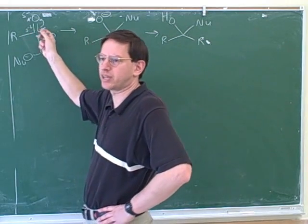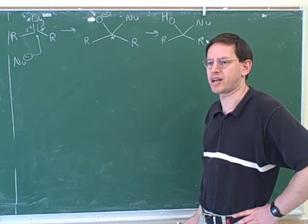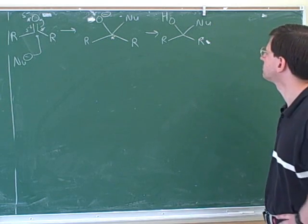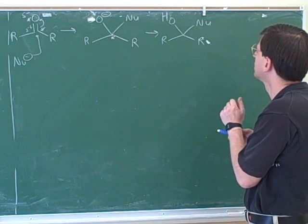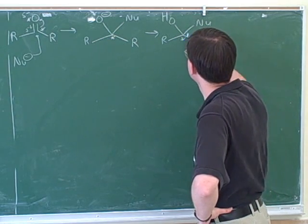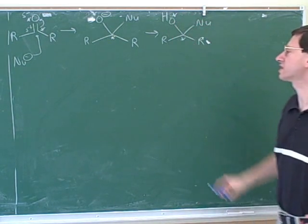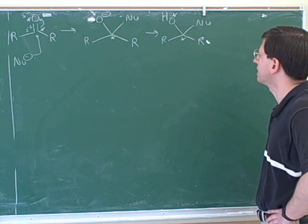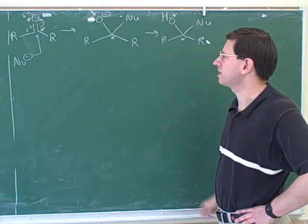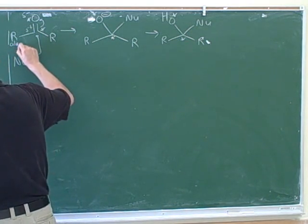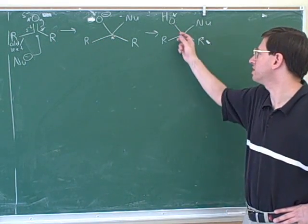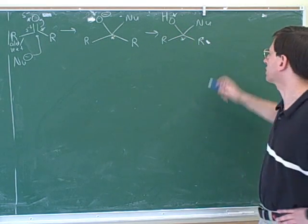I drew a ketone here, but this could be an aldehyde or a ketone — aldehydes and ketones basically go through the same types of reactions. When a nucleophile attacks, you don't have a carbonyl carbon anymore; you have a tetrahedral carbon. This is what we can call category one.